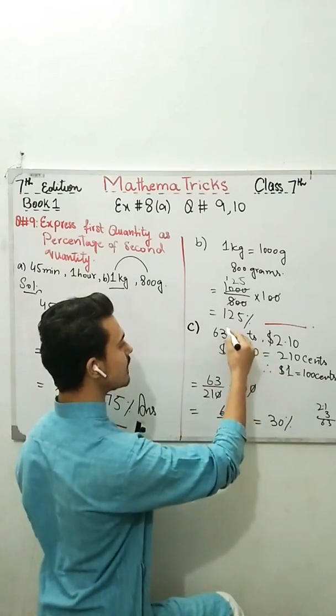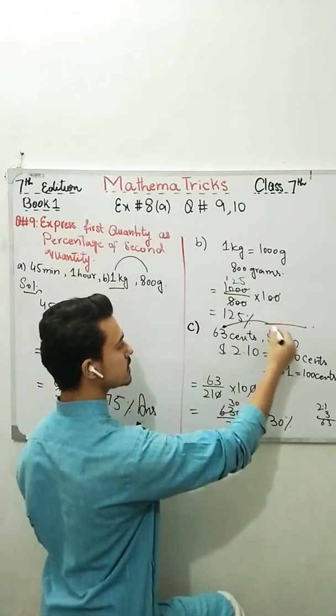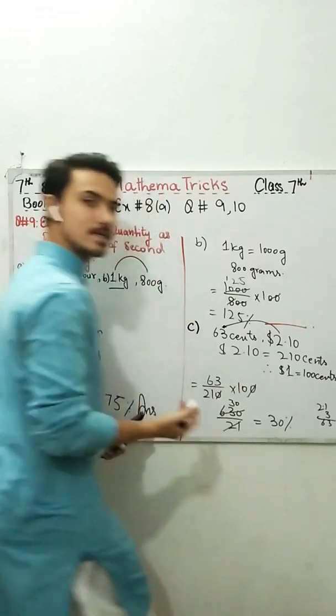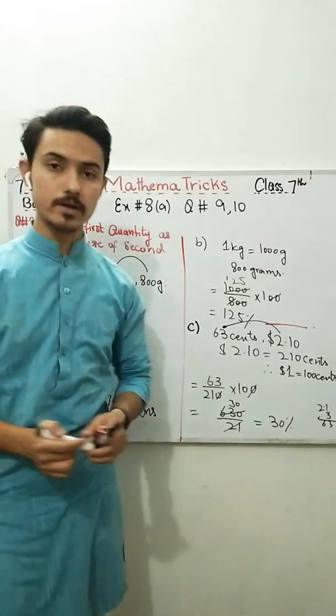I got 30 percent. So basically, this value, 63 cents, is the 30 percent of this value. Easy. Hope you got the point. The question is clear.